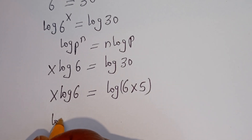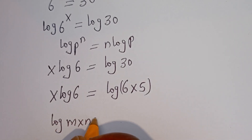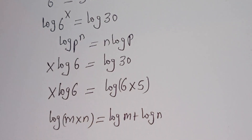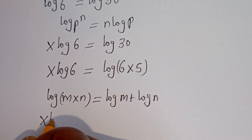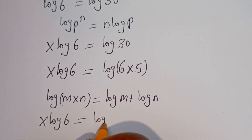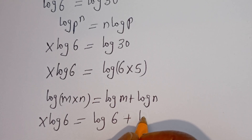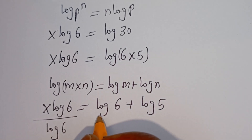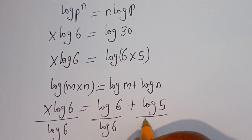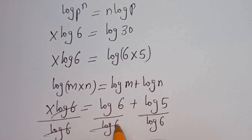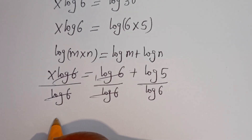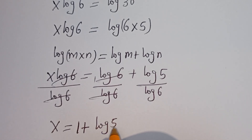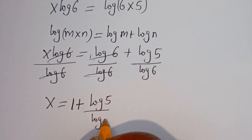Using the rule that log(M × n) equals log M plus log n, this becomes x·log 6 equals log 6 plus log 5. Let's divide both sides by log 6. This cancels, and we get x equals 1 plus log 5 over log 6.